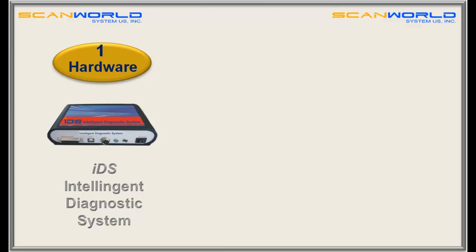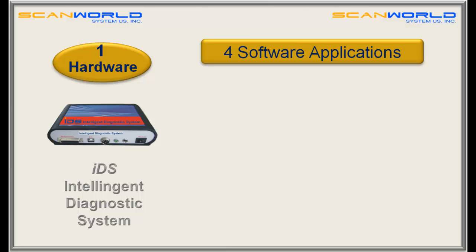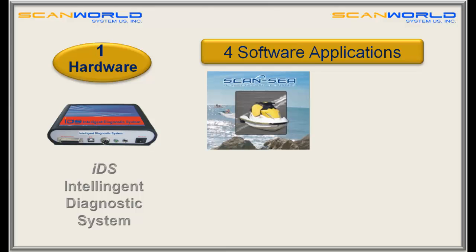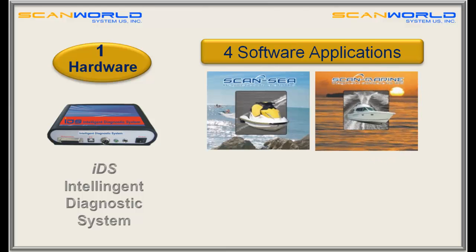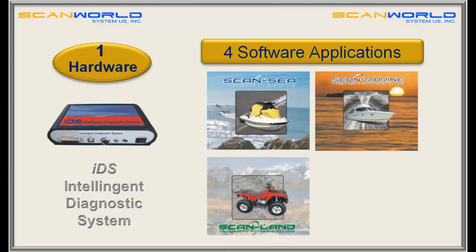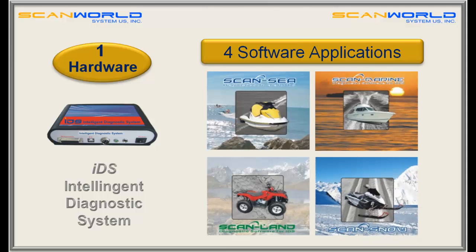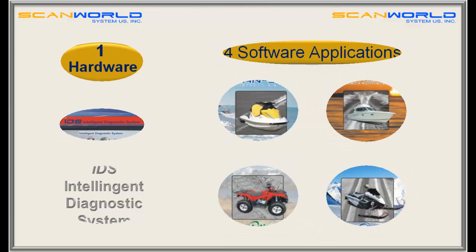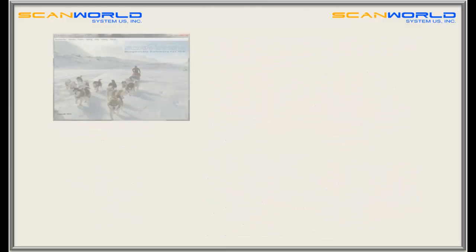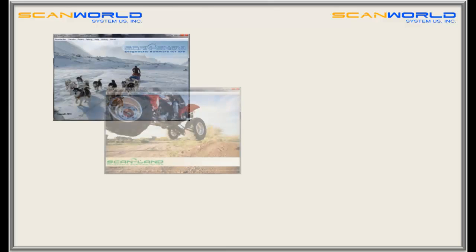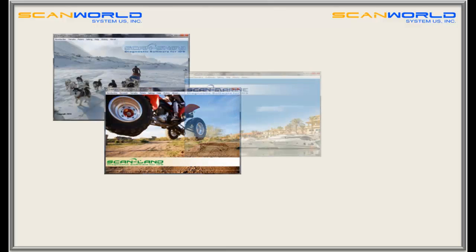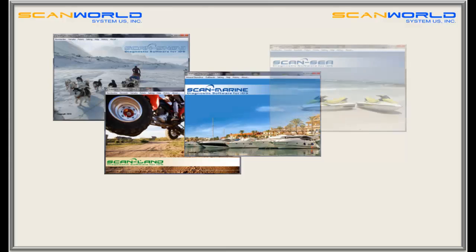One hardware and four software applications: ScanZee for personal watercraft, ScanMarine for boats, ScanLand for ATV, and ScanSnow for snowmobiles. All software applications have the same easy-to-use structure. Knowing one software means knowing all four of them.